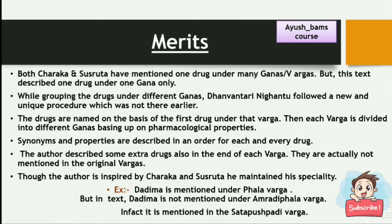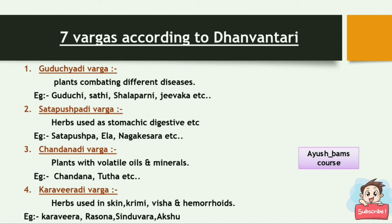Discussing the 7 Vargas in detail: Guduchyadi Varga consists of plants combatting different diseases — for example, Guduchi, Shetty, Shalapani, Jeevaka, etc. Satpushpaadi Varga contains herbs used as stomatics, digestives, etc. — for example, Satpushpa, Ela, Nagakeshara, etc. Chandanadi Varga contains plants with volatile oils and minerals — for example, Chandana, Tuta, etc.